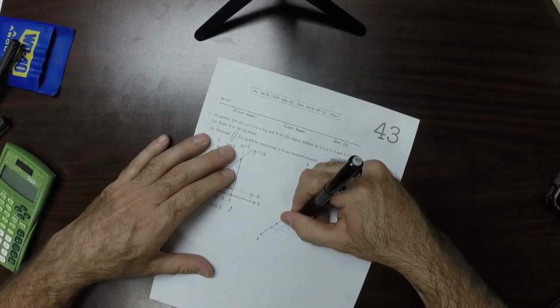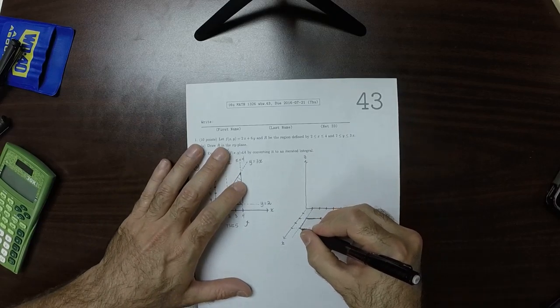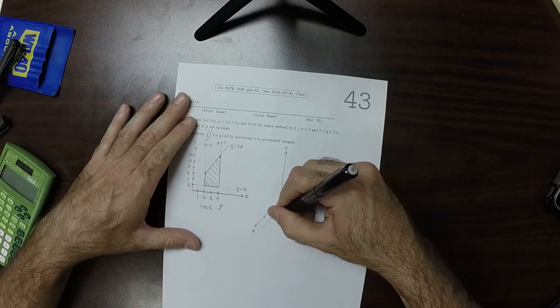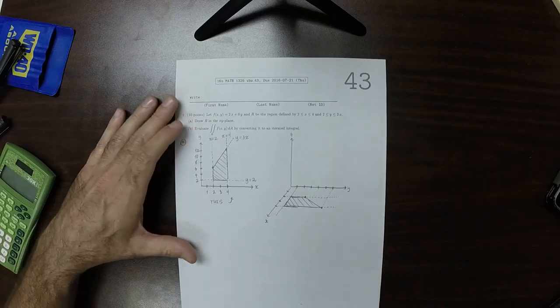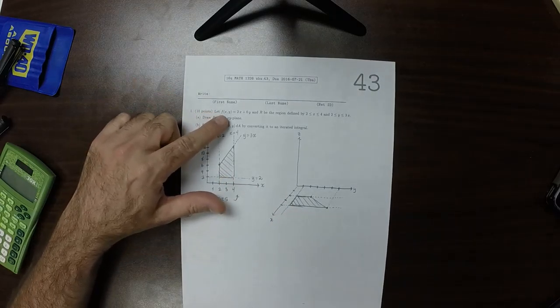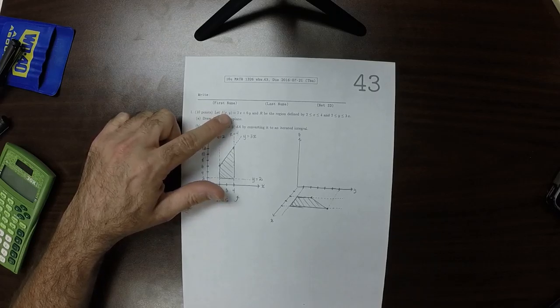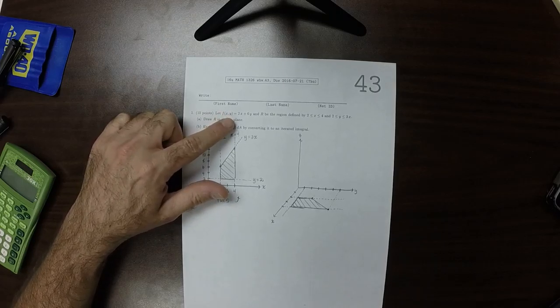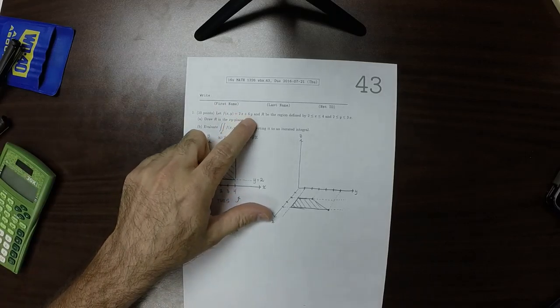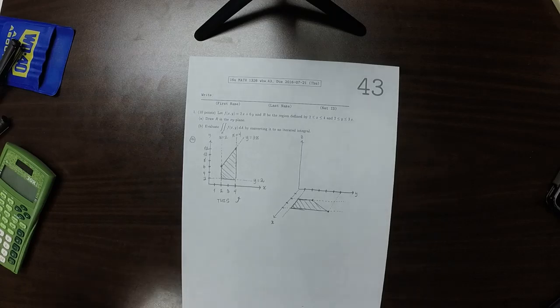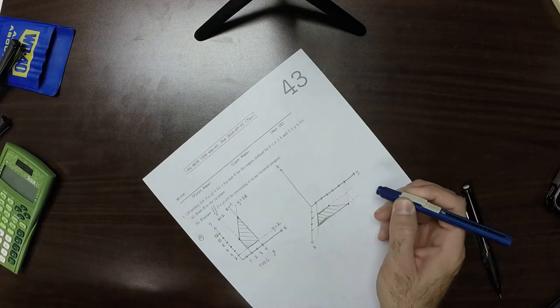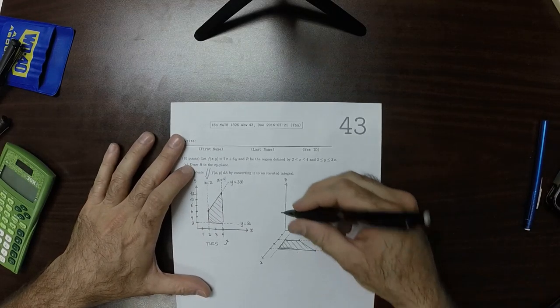So here's the shape in the x, y plane. So that shape is that shape. And then if you were to plot f of x and y, it is a plane, because it's 2x plus 6y. So it's linear in x and linear in y, so it's a plane. And I'll just roughly sketch what that plane would look like above here.